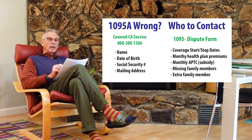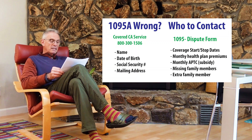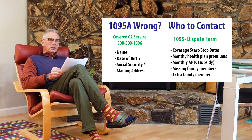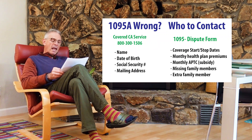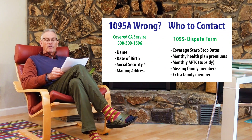If you notice an error on the 1095-A, there are a couple different places you have to go to correct it. You can call Covered California's 1-800 number for certain issues, such as if the name is wrong, date of birth, social security number, or mailing address. But there are other issues — primarily relating to dollars — where you have to fill out a dispute form with Covered California. Those issues include coverage start and stop dates, monthly health plan premiums, monthly APTC (the subsidy), missing family members, or extra family members. Maybe someone shouldn't have been in the household and should have their own 1095-A because they are filing their own taxes.